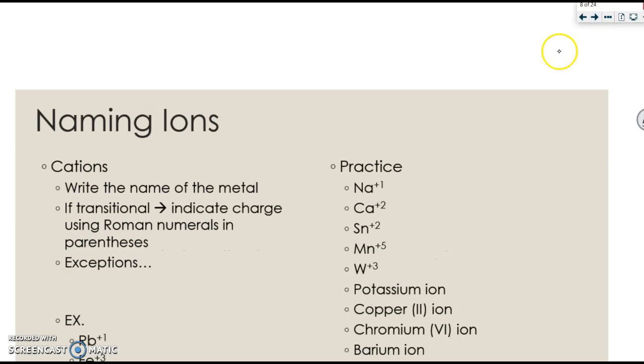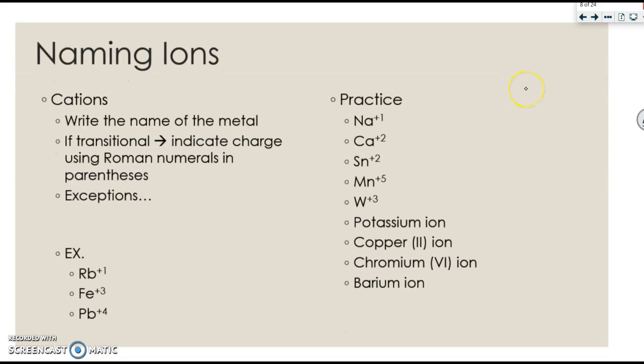First, we're going to talk about how to name ions and ionic compounds, and then we'll talk about the formulas. So when I'm naming ions, when I'm doing cations, I'm going to write the name of the metal. So sodium is sodium. Iron is iron. Rubidium is rubidium.